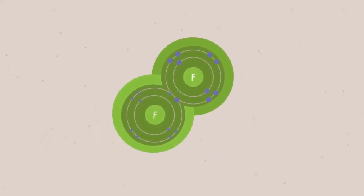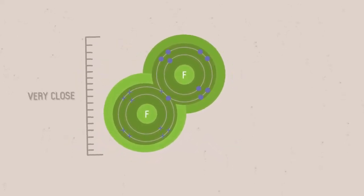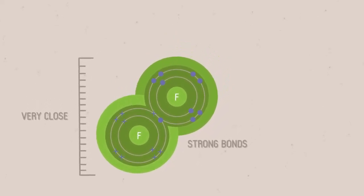The overlap between orbitals means that the atoms in covalent bonds are very close. These things make covalent bonds strong.